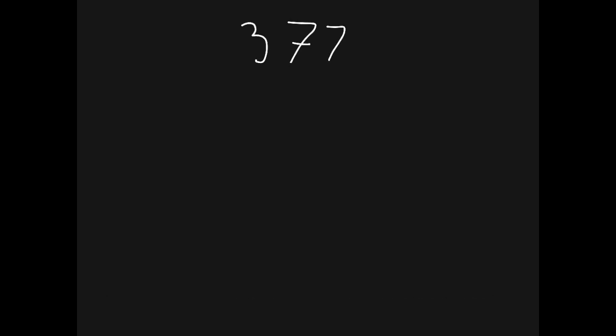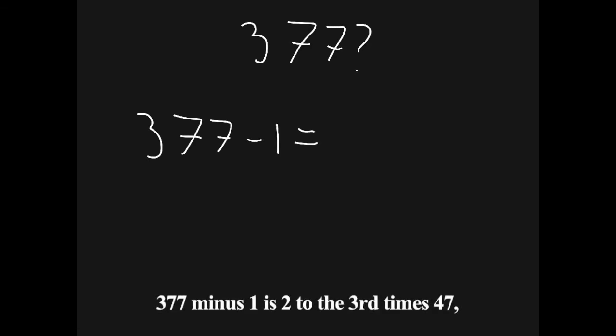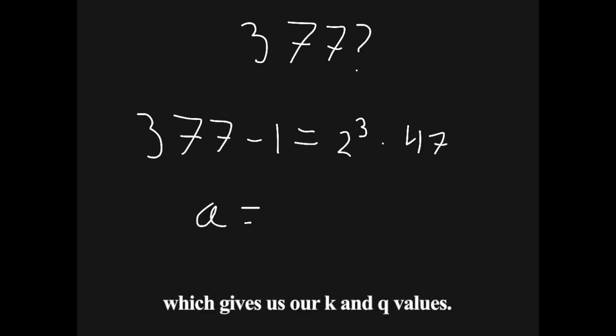With all that in mind, let's go over an example. Suppose we want to determine whether 377 is a prime number. 377 minus 1 is 2 to the 3rd times 47, which gives us our k and q values.